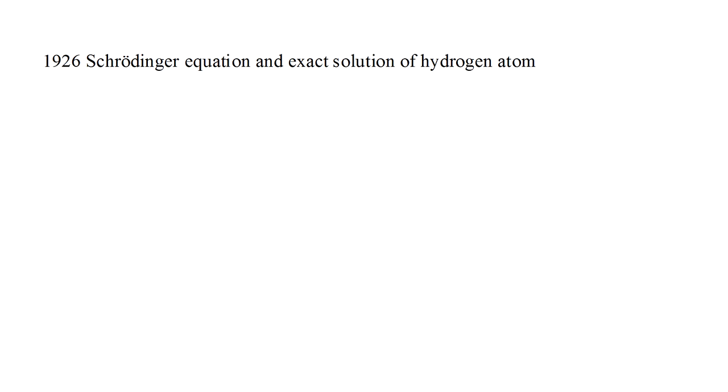The pace of breakthroughs in the application of quantum mechanics to chemistry was rapid. In 1926, Schrödinger presented his equation and the exact solution of the hydrogen atom. In 1927, Born and Oppenheimer published their method for separating the electronic and nuclear components of the wave function.